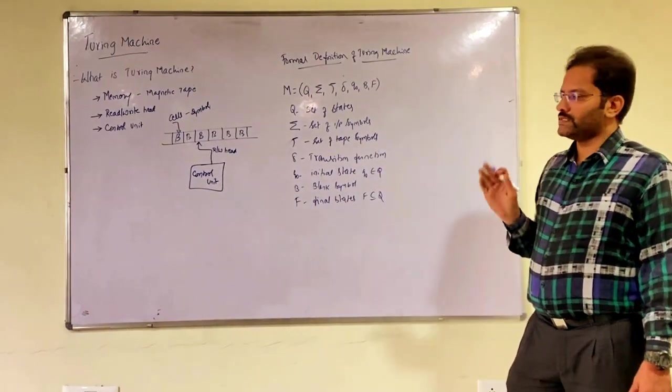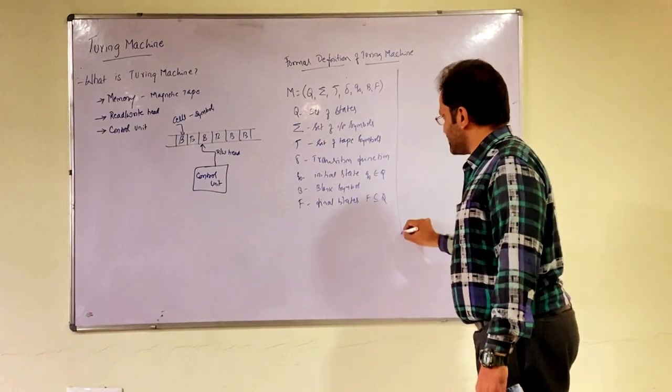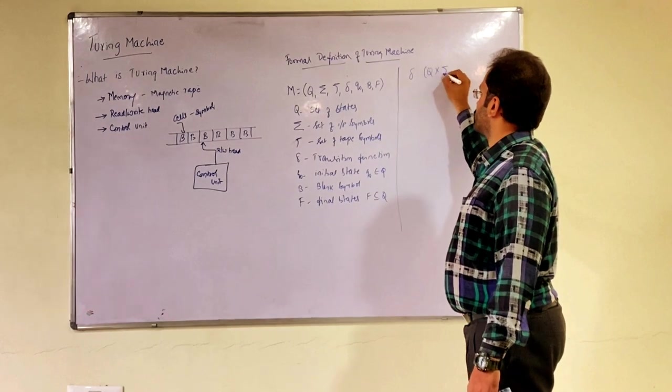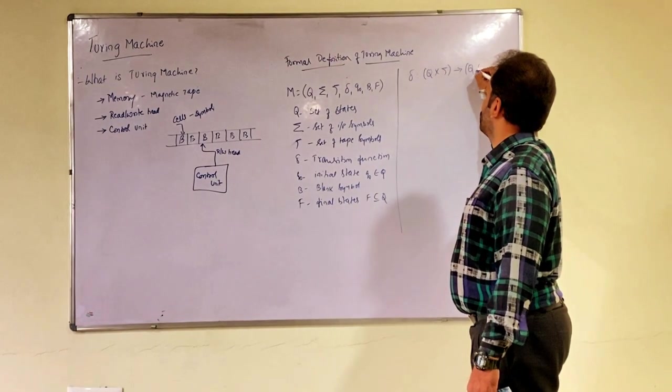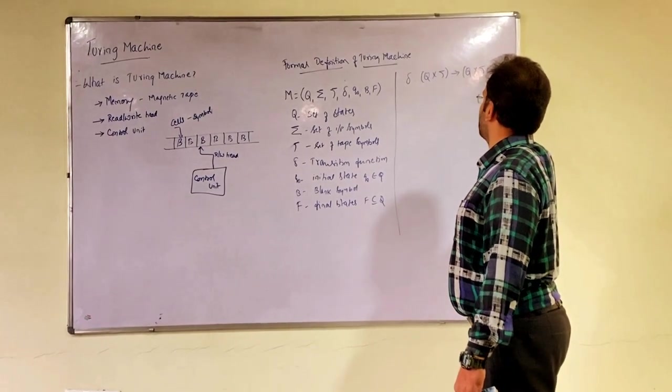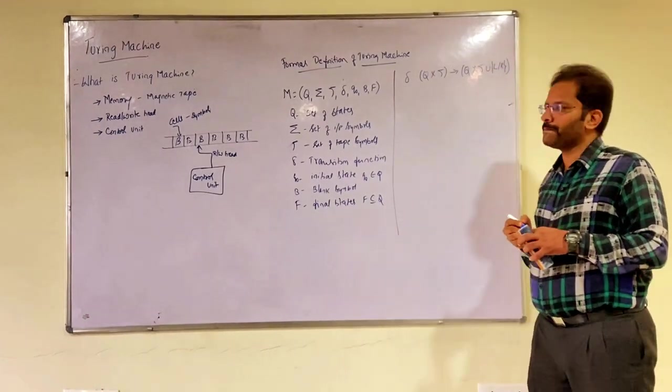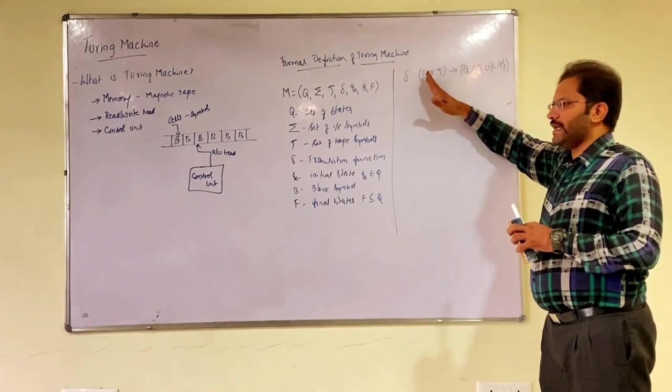Now what is transition function is the question. Transition function can be defined as Q cross Tau that gives rise to Q cross Tau union left or right. Observe properly, it talks about you are mapping with the state and tape symbol that would give rise to state, tape symbol along with whether to move read-write head towards left or right.